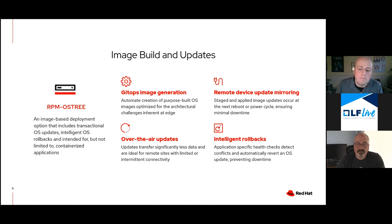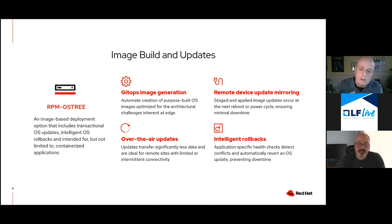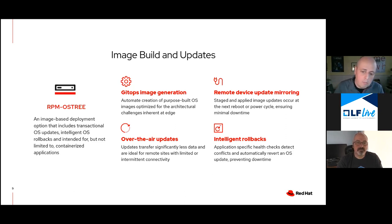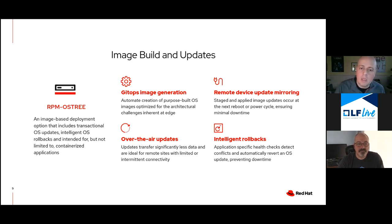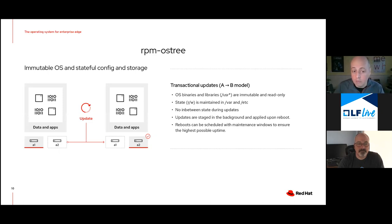LibOStree is essentially a way to define OS filesystem trees, almost like Git, where you can have layers and tag specific versions. The essence of it becomes like an appliance deliverable that you can push out. Updates, instead of being per-RPM, are full atomic updates. That has a lot of advantages from an edge standpoint, because one of the things we want is to limit downtime and maximize uptime at those edge devices. We'll talk about rollbacks and health checks — it's either all the updates succeed or it rolls back.